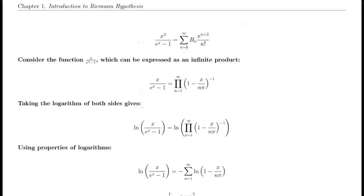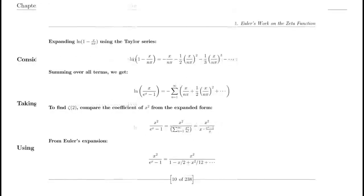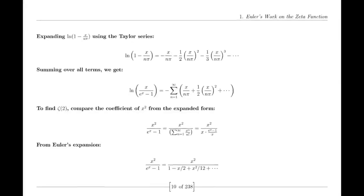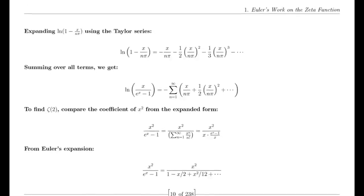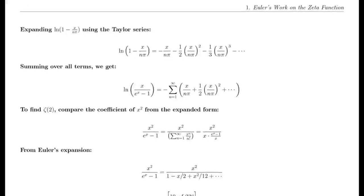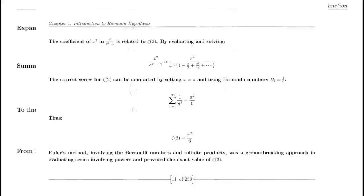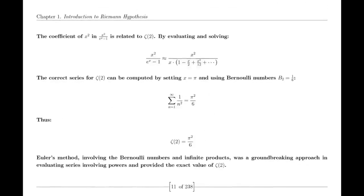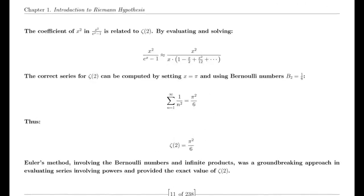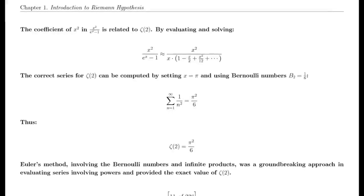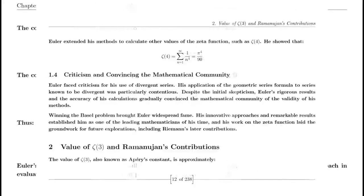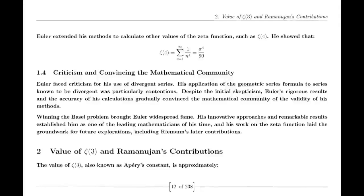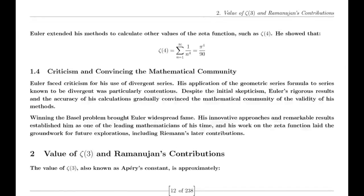The functional equation of the zeta function relates its values at s and 1 − s through a complex expression involving π, the gamma function, and trigonometric functions. This equation is a key result in the theory of the zeta function, showcasing its symmetry and the deep relationships between different mathematical concepts.